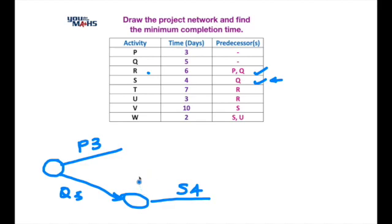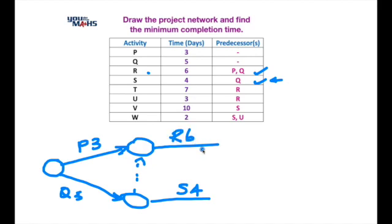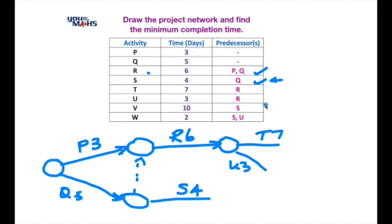Because activity R has predecessors P and Q, we need to draw a dummy activity coming off the end of Q towards the node where P is completed. This indicates that S can proceed after just Q, but R cannot start until both P and Q are done — which is what that dummy activity is doing. We draw activity R off that node for six days. Moving down the table, T and U both come off R, so we place a node at the end of R and draw T for seven days and U for three days.